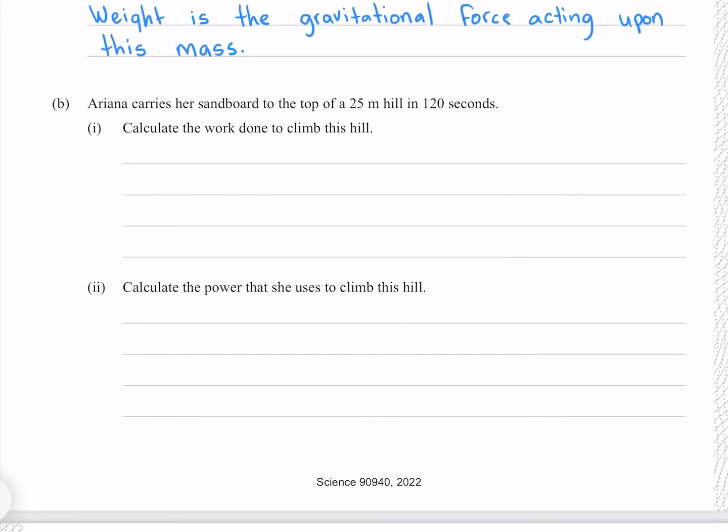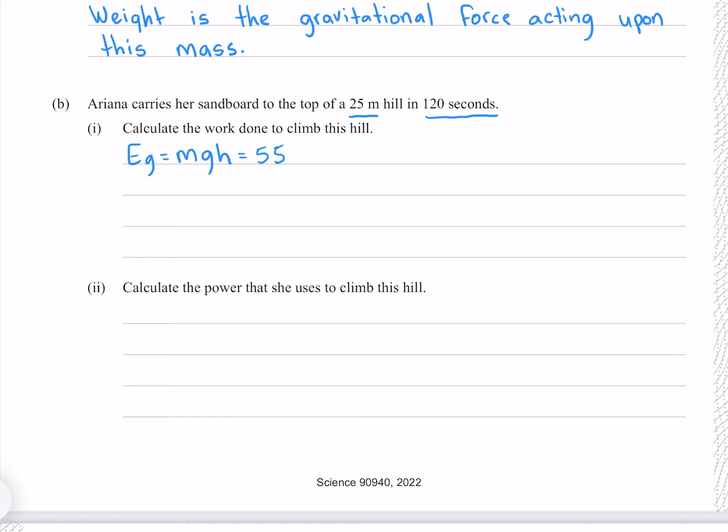Ariana carries her sandboard to the top of a 25 meter hill in 120 seconds. The work done to climb this hill is equivalent to the gravitational potential energy she gained when she did. The equation for gravitational potential energy is MGH, where the mass is 55, the acceleration due to gravity is 10, and the height is our 25 meters, which gives me 13,750 joules.